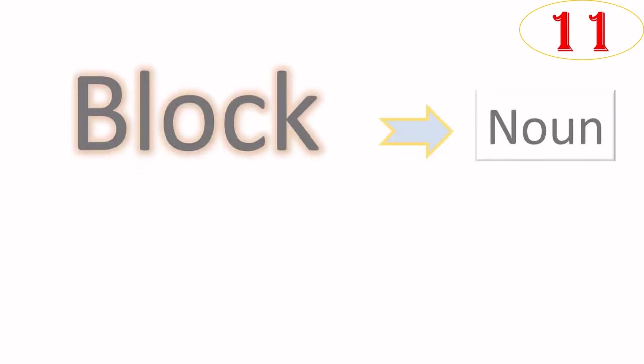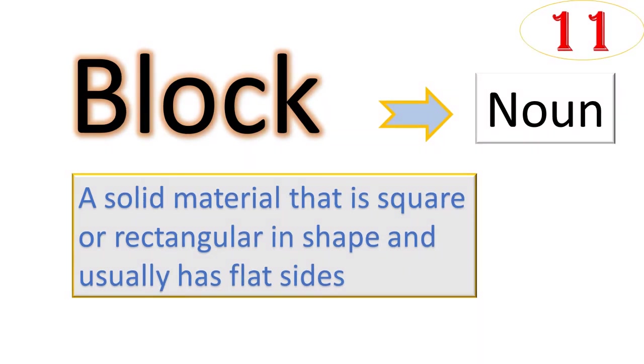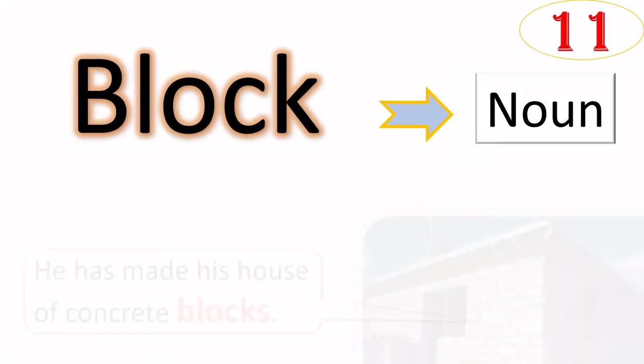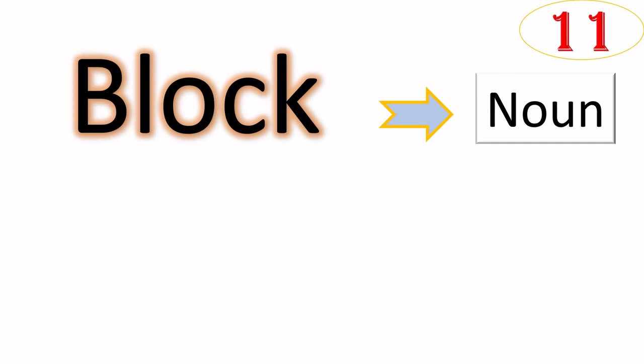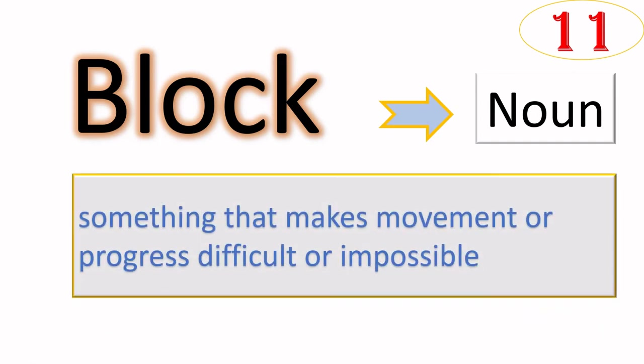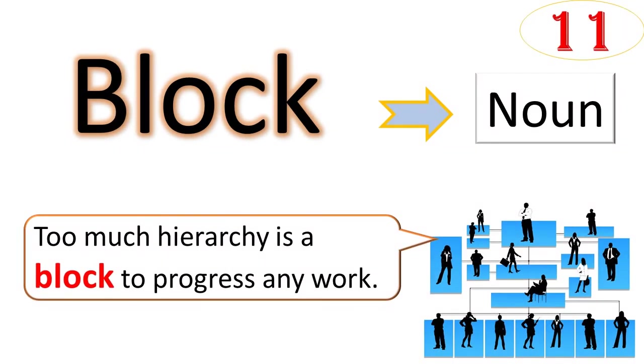When we use the same word as noun, it means a solid material that is square or rectangular in shape and usually has flat sides. For example, he has made this house of concrete blocks. As noun, block can also mean something that makes movement or progress difficult or even impossible. For example, too much hierarchy is a block to progress in new work.